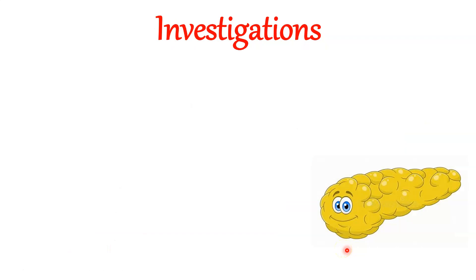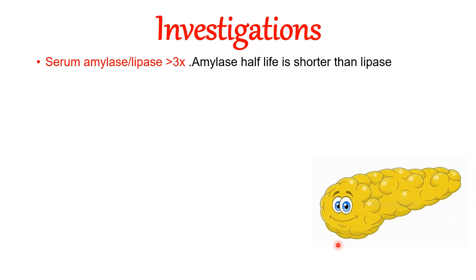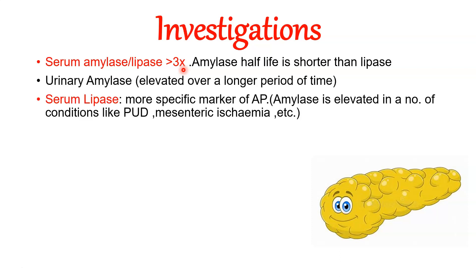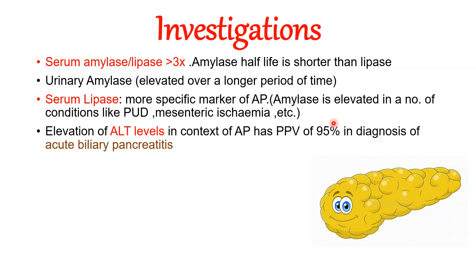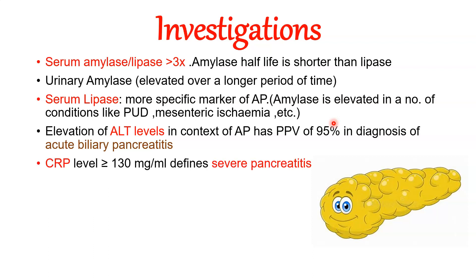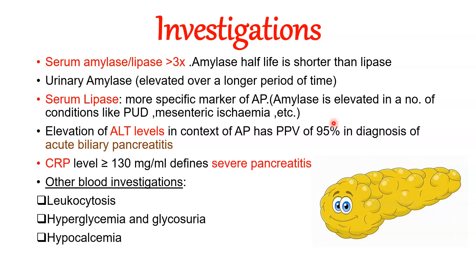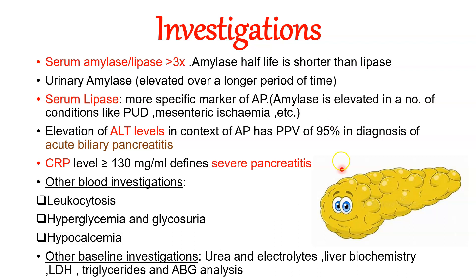Serum amylase and lipase are elevated more than three times the normal value in acute pancreatitis. Lipase is a more specific marker because amylase is elevated in many other conditions like peptic ulcer disease and mesenteric ischemia. Elevated ALT levels in addition to elevated amylase and lipase help in diagnosing acute biliary pancreatitis. These patients also have leukocytosis. Other investigations include LDH, urea and electrolytes, liver biochemistry, triglycerides, and ABG analysis.